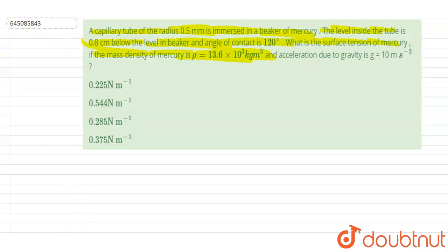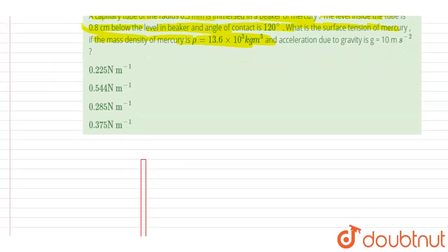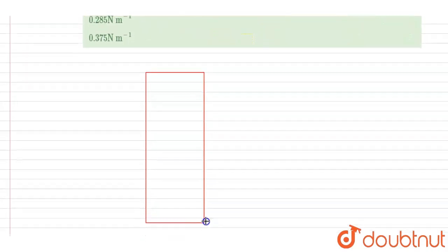If you see here, let's say this is the capillary tube and it is said that the contact angle is 120 degrees. So the upper surface of the mercury will be like this. And if you draw a tangent at the point of contact, then this angle will be 120 degrees.